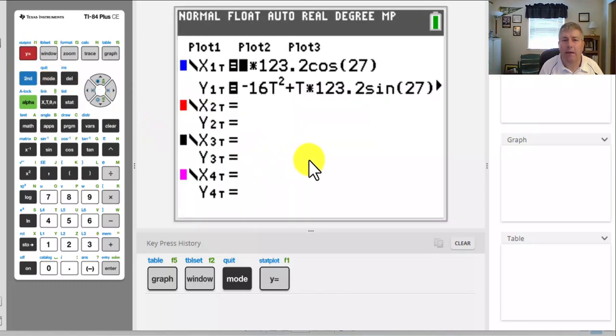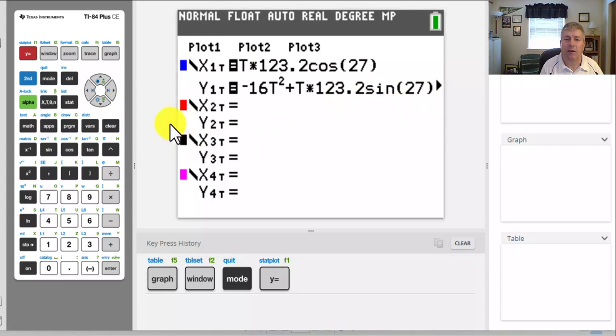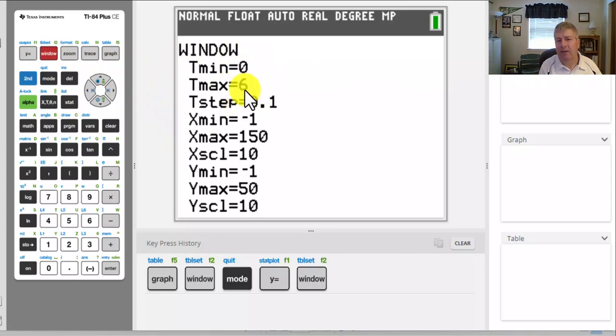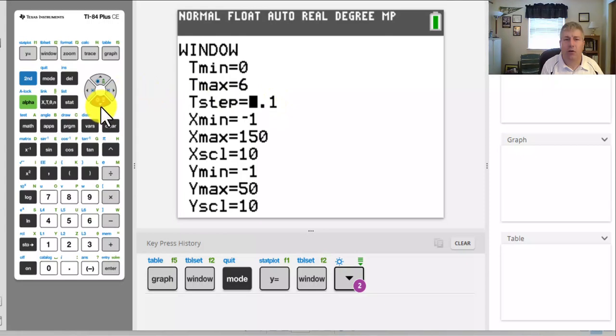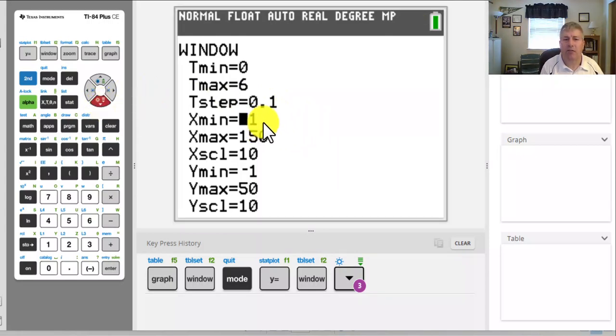So I go to my graphing calculator, and again, make sure it's in parametric and degree mode. So I went into the mode key here, and I'm already set at degrees and parametric. And I can go to my Y equals, and I went ahead and I took the liberty of input my two equations, my X equation, 123.2 cosine of 27 times T, and then the negative 16 T squared plus 123.2 sine of 27 T, plus whatever that value was. I'll go ahead and set my window. I've got it set for six seconds, and a count by every one-tenth of a second.